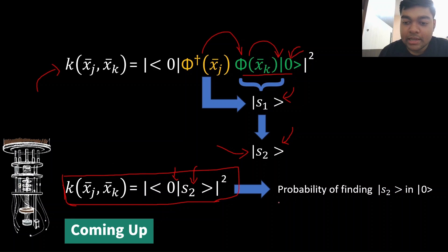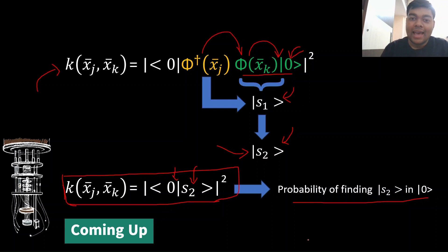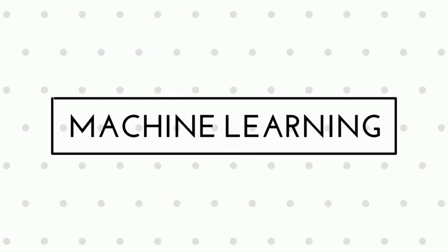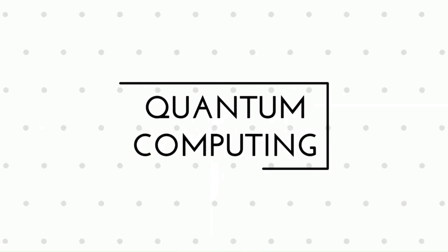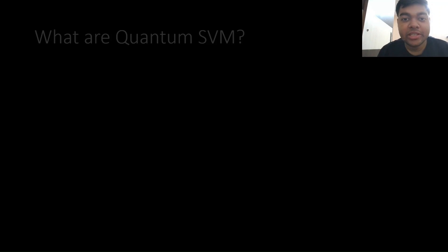The kernel function is nothing but the probability of finding state s2 as state zero. And that's what quantum support vector machines are essentially. Hi, I'm Jay Shah, a quantum machine learning developer, and today we are going to talk about quantum support vector machines.